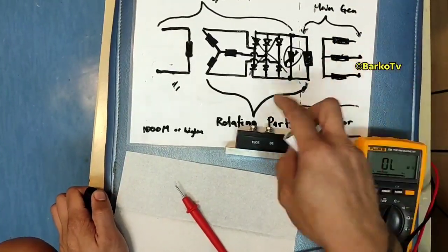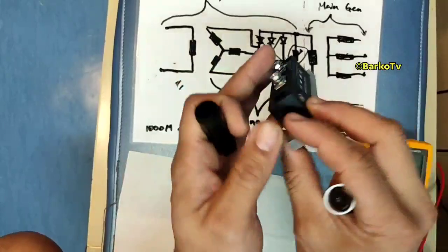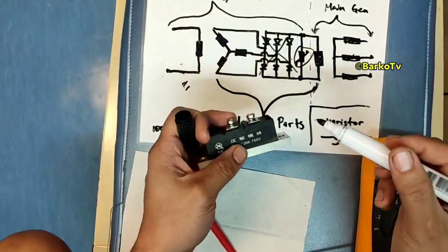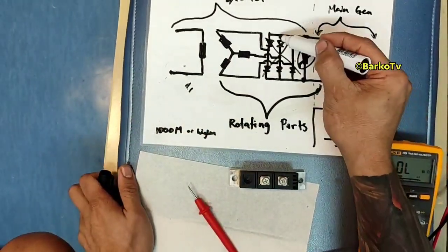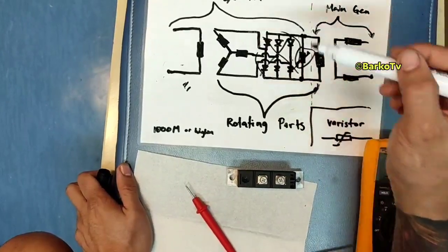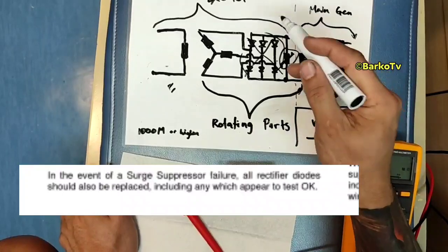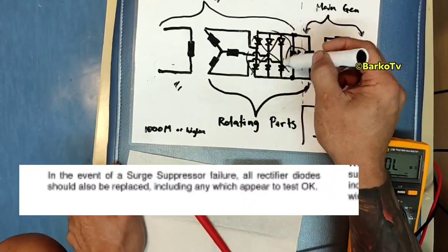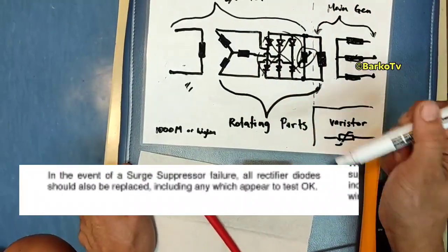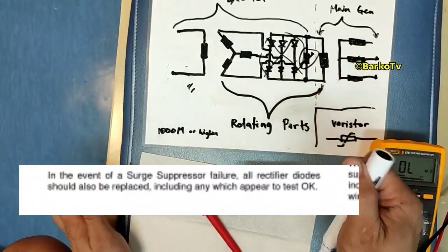If this varistor is damaged, as per manual you need to replace also the diode, even though you check the diodes and they are working, you need to change all of the parts as per manual.